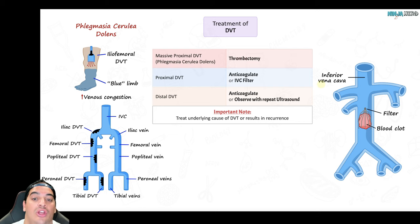To prevent venous thromboembolism, treat the underlying cause. For hospitalized, immobile patients on bed rest — who have increased risk of venous stasis and DVT — give pharmacological prevention: low molecular weight heparin or subcutaneous heparin, provided there are no contraindications. If anticoagulants cannot be safely given, use sequential compression devices — pneumatic compression sleeves placed on the legs that intermittently squeeze the veins to keep blood moving. These are the key strategies for understanding and preventing venous thromboembolism.